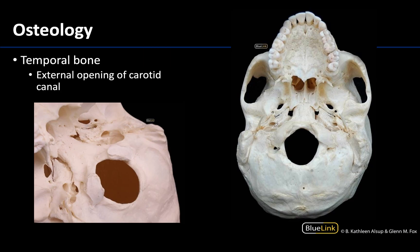Also of the temporal bone is the external opening of the carotid canal. This is where the ICA or internal carotid artery is going to enter into the skull in order to provide blood supply to the brain. We talked about the vertebral arteries coming up through the foramen magnum; your internal carotid arteries are your other main supply of the brain, and this is how they are getting into the skull. The internal carotid artery is going to be a branch of the common carotid, which we're going to see fairly well in the anterior neck dissection.